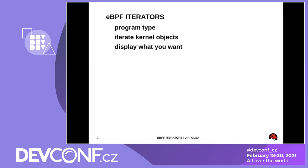In a nutshell, it's technology in the kernel that allows you to load a custom program to the kernel, and this program will be executed on certain points in the kernel. We have many different types of programs that we can load to the kernel — for example, for trace points, for k-probes, for any other probes, and many network objects. And eBPF iterator is another object that you can load a program for — it's another program type.